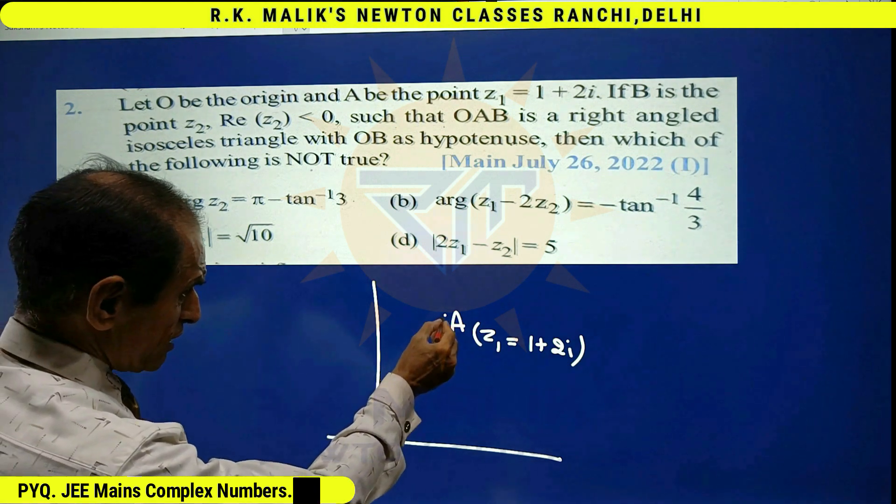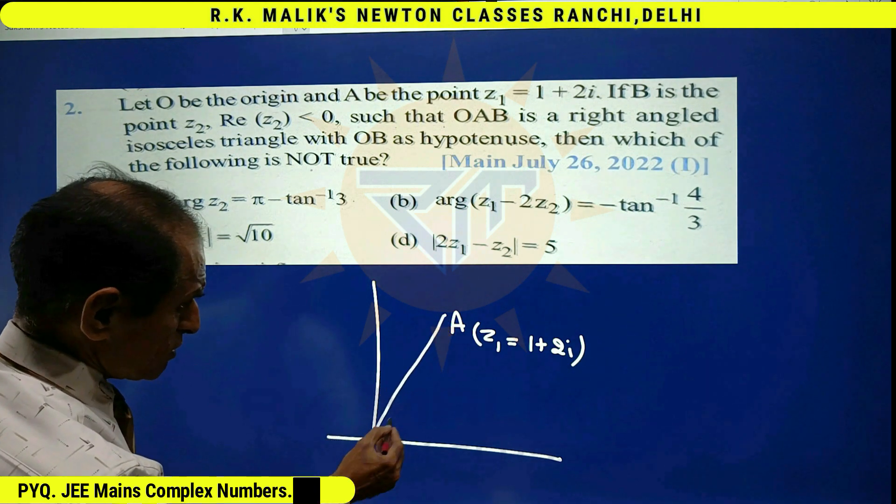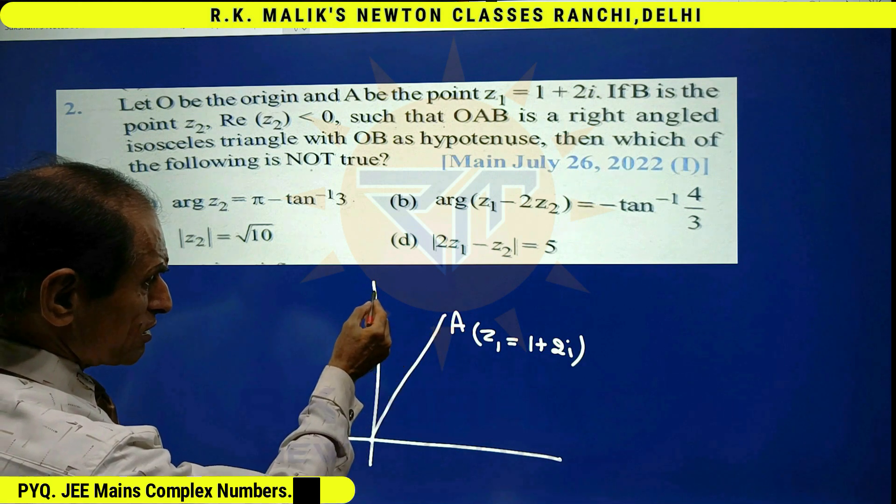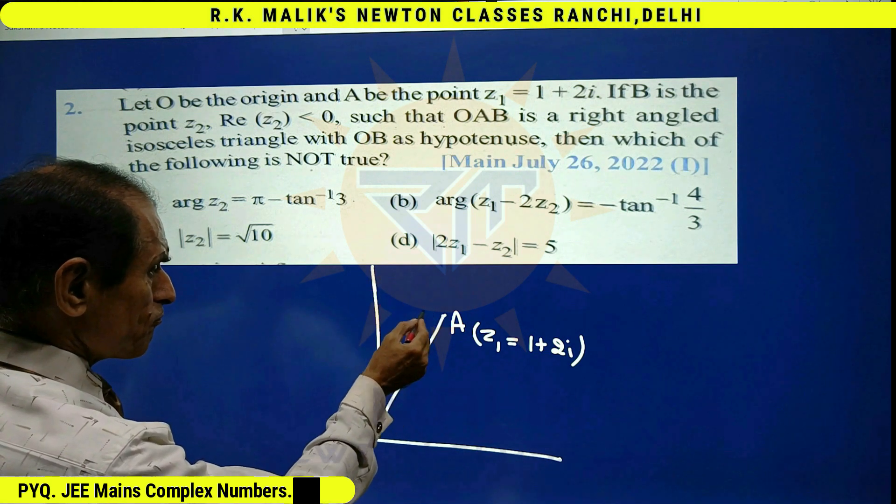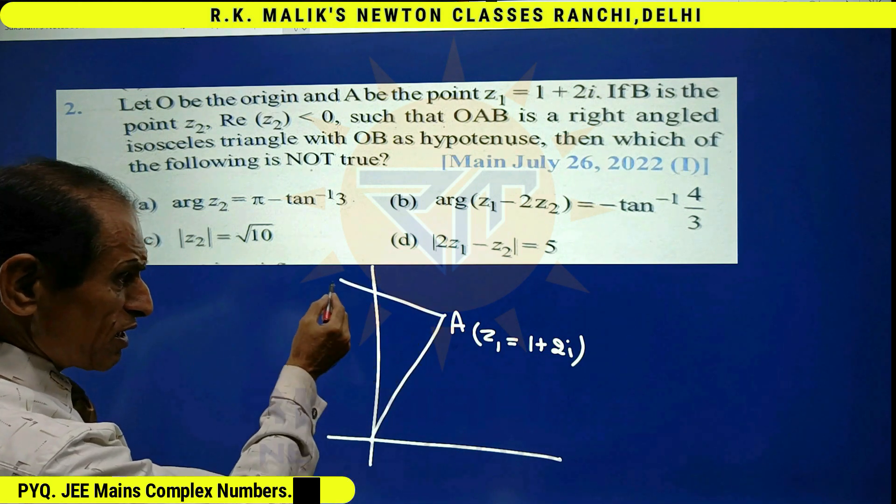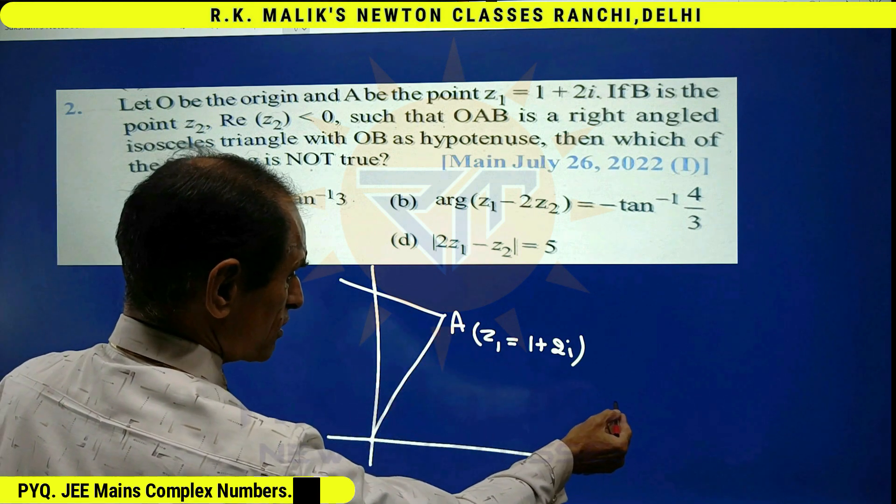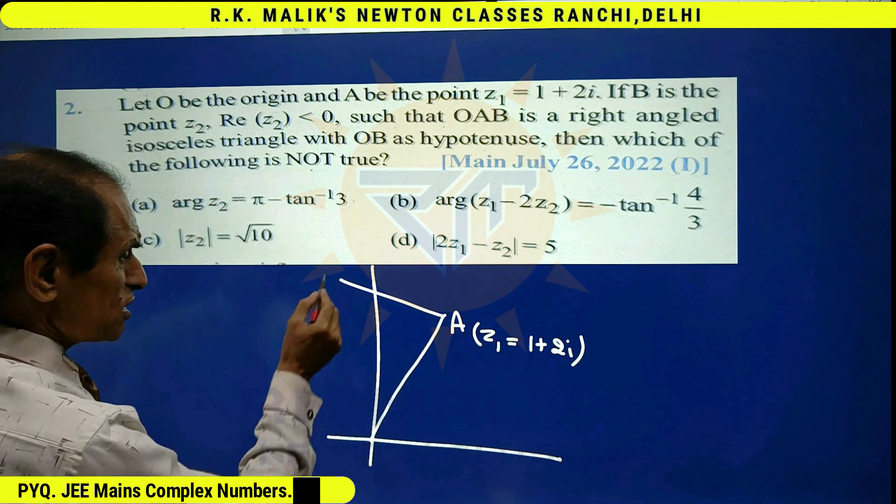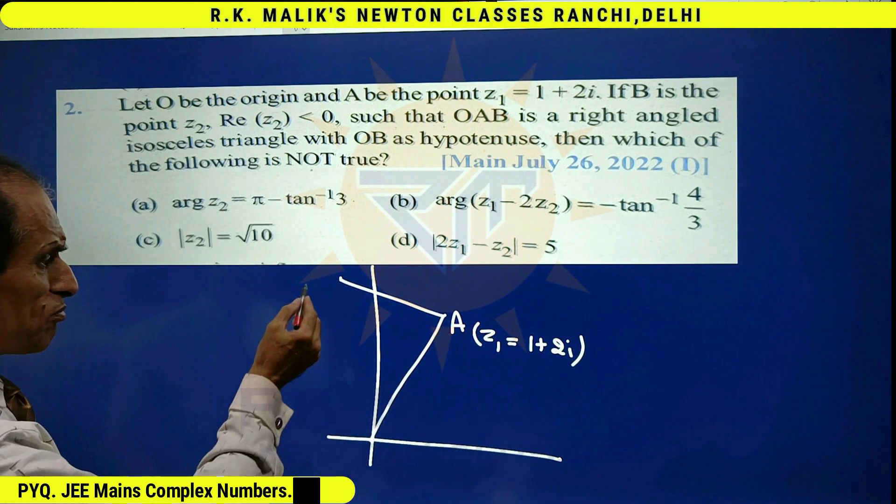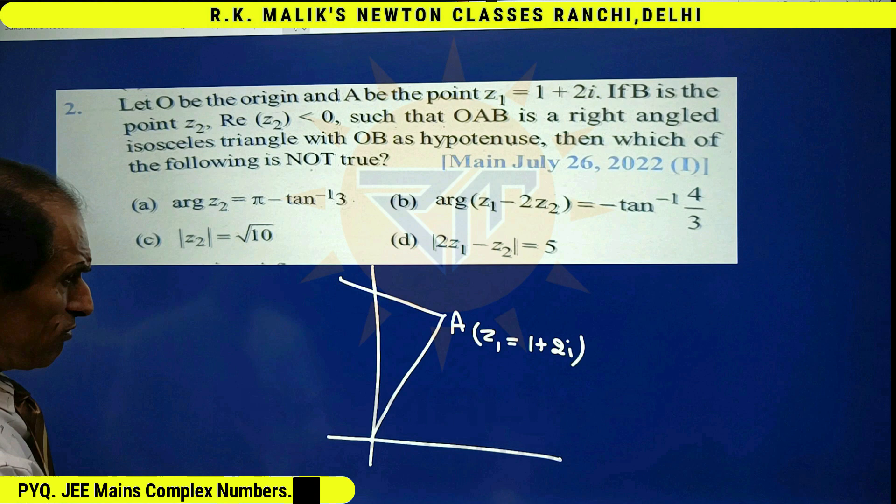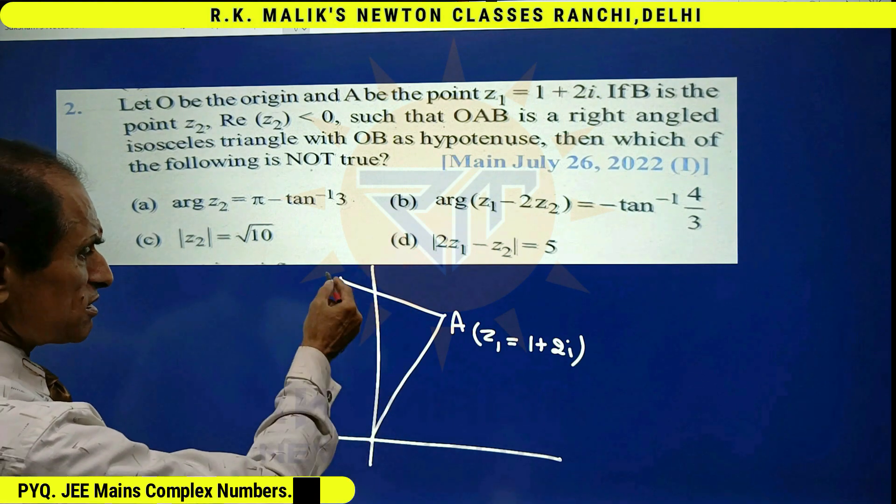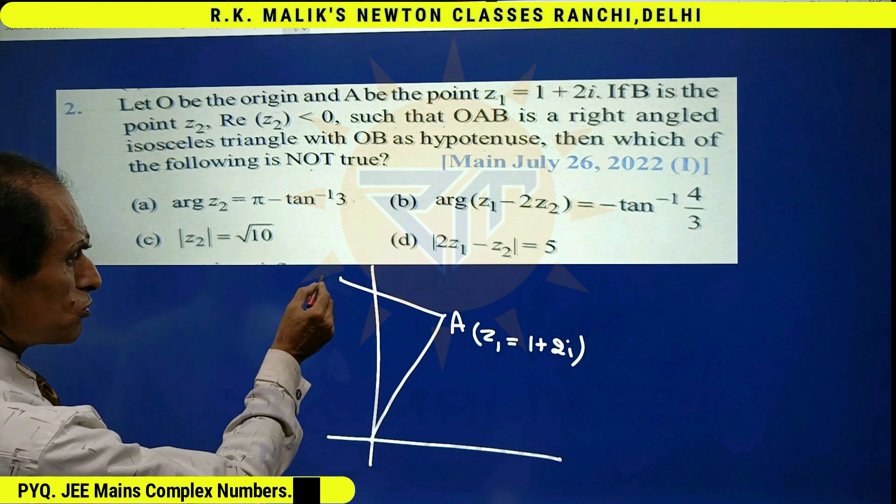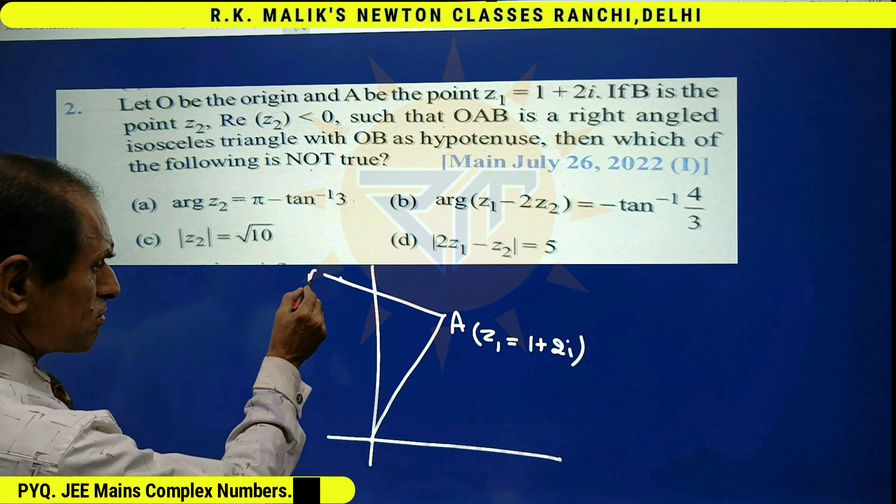If the right angle is at A, then B must be somewhere here because if B goes there, then real part of z2 will become positive. For this case, only possible that real part of z2 is negative. And it is given that this triangle is isosceles also. Suppose this is the point B.